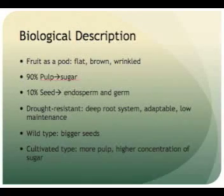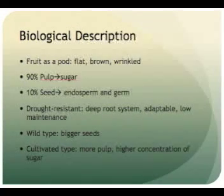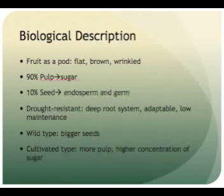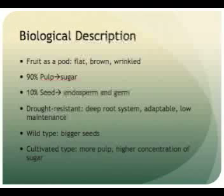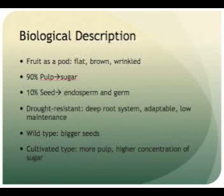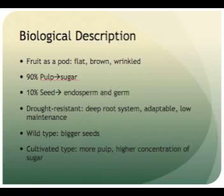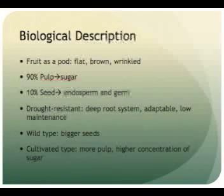The carob tree produces its fruit in the form of a pod containing pulp and seeds. The seeds are split into two parts: the endosperm and the germ. As a whole, the fruit is 90% pulp and 10% seed. However, wild type seeds are significantly larger than cultivated seeds. The pod is mostly flat and can be either straight or curved.